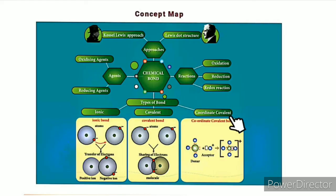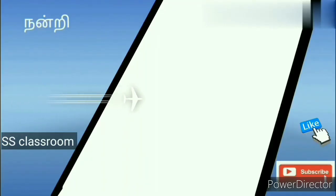In this video, we covered Lewis Dot Structure Approach to Chemical Bond — showing valence electrons with a symbol and dots. In our next video, we will discuss types of bonds. Thank you.